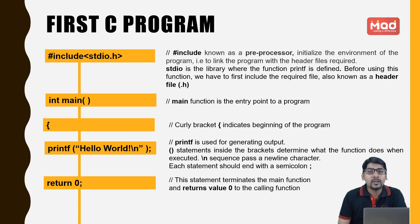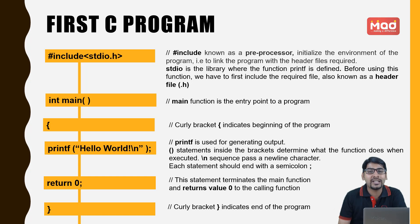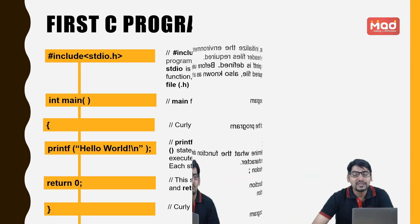The return 0 statement will return a value 0 when the program is executed correctly. This is a guarantee that your program has executed correctly. Next comes the closing bracket which determines the end of your program and terminates the main function.